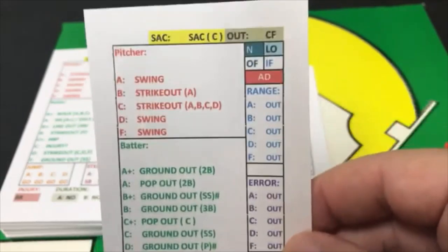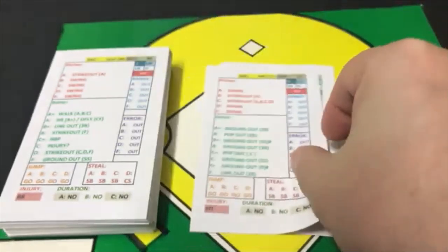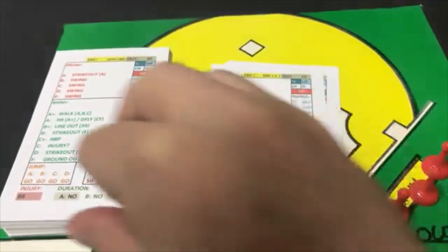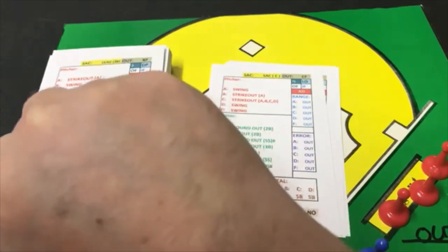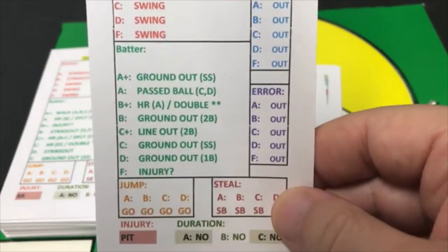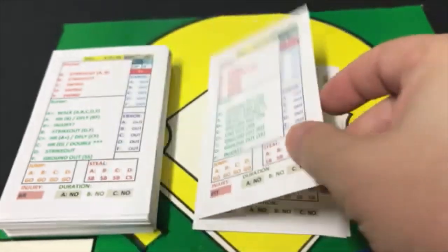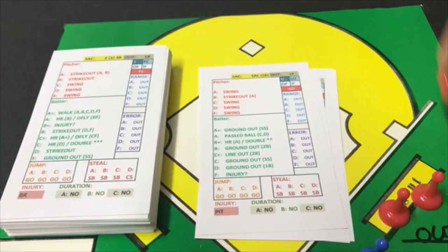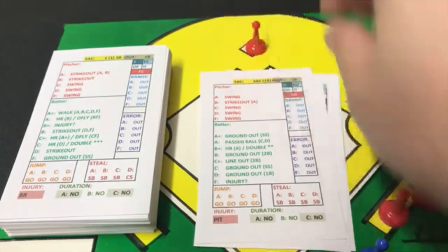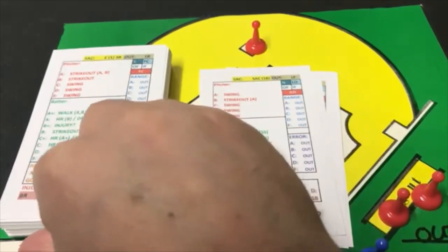Chapman is an A batter against an A pitcher. You look up — it's a swing, and an A batter pops out to second base. Two down. Next batter is Tris Speaker — a B-plus batter against an A pitcher. The A pitcher gets a swing, and B-plus gets a home run only if he's an A at home runs, which he isn't. So it's a double. We have a man at second base — a double for Speaker.